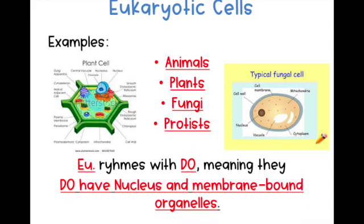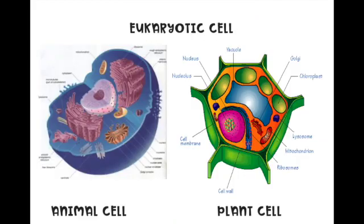Eukaryotic cells include everything else: animals, plants, fungi, protists. Remember: 'eu' rhymes with 'do,' because they do have a nucleus and they do have membrane-bound organelles. Both of these cells may look very different, but they are both eukaryotic cells because they both have a nucleus and other membrane-bound organelles. A prokaryotic cell would not have those things.